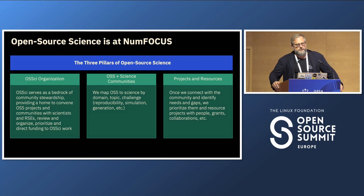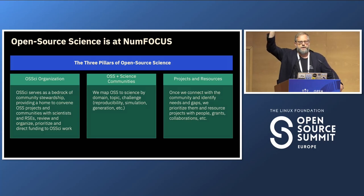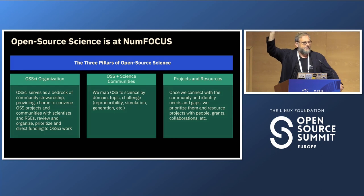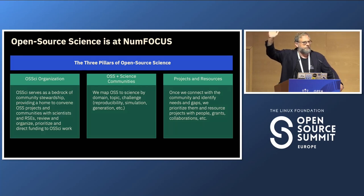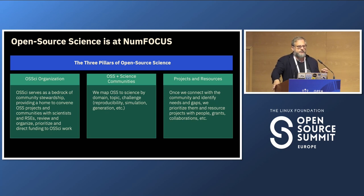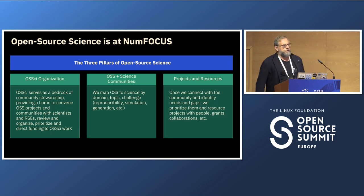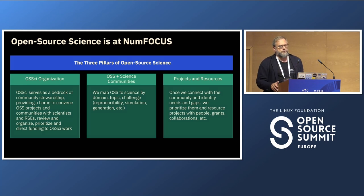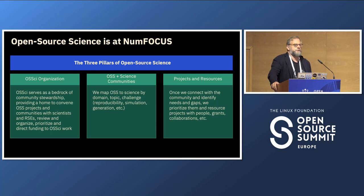It turns out that scientists approach software differently than professional software engineers. I wonder who here comes from a scientific background. Scientists really need open source tools. Scientists usually do not have too much money, and scientists work collaboratively, so scientists are wired by their DNA to use open source.